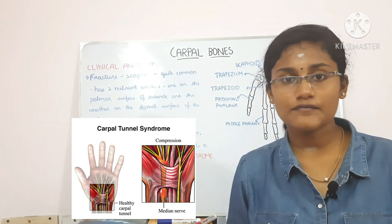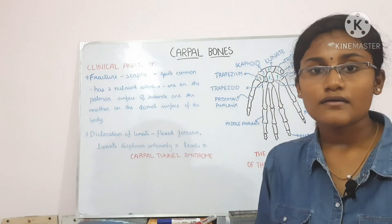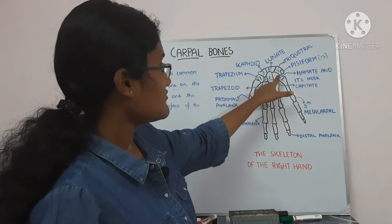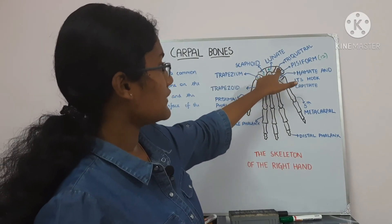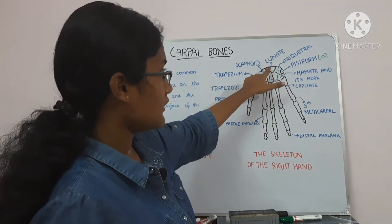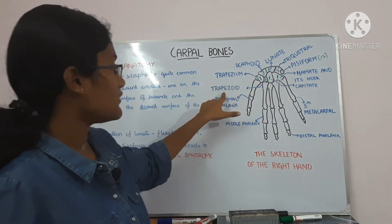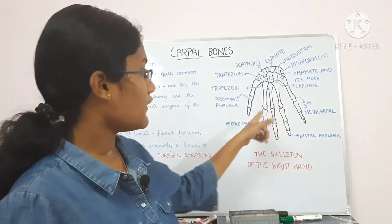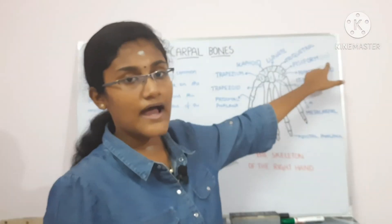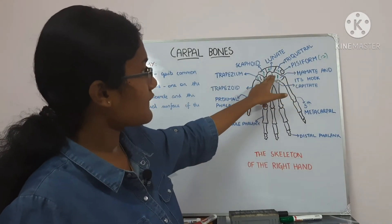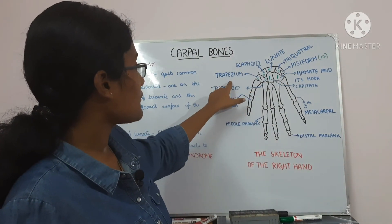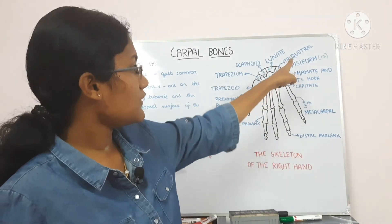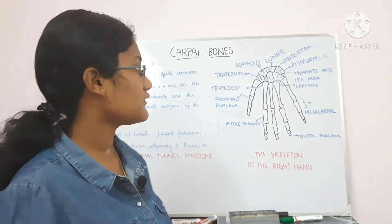Now let's talk about the ossification of the wrist bones. There are eight centres. The capitate and hamate each have a centre which appears by the first year. The triquetral has a centre which appears by the third year. The lunate has a centre which appears by the fourth year. The scaphoid, trapezium and trapezoid each have a centre which appears by the fifth year. The pisiform has a centre which appears by the twelfth year. So the pisiform is the last bone to ossify, the hamate and capitate are the first, and you can remember triquetral with three — in the third year the ossification centre for the triquetral appears.